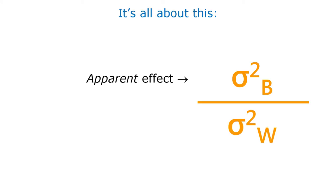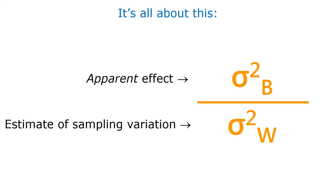So it's all about this ratio: between-groups variance divided by within-groups variance. The between-groups variance is the apparent effect — it's what looks like is happening that we're interested in. We say apparent because anything in our sample is apparent and we don't really know how well it reflects the population. We keep it honest by comparing it to the estimate of sampling variation, which is the pooled within-groups variance.